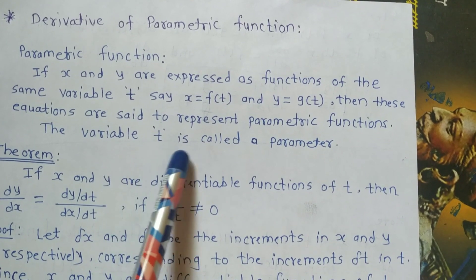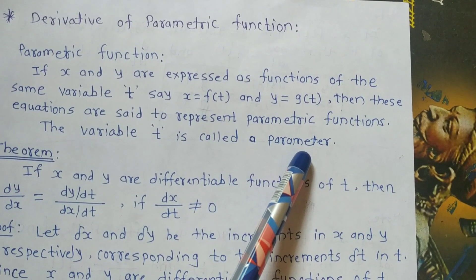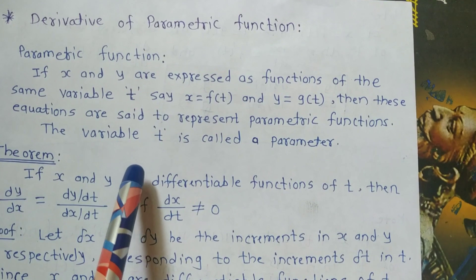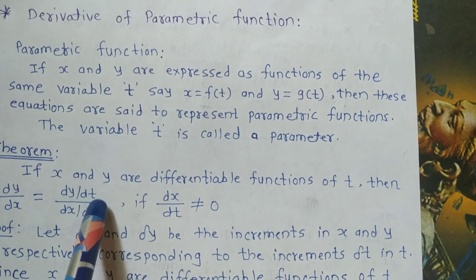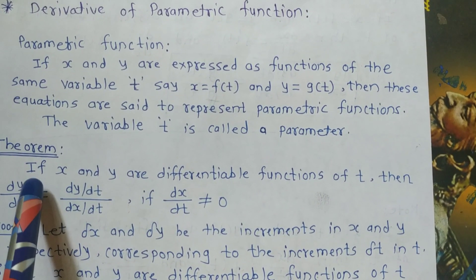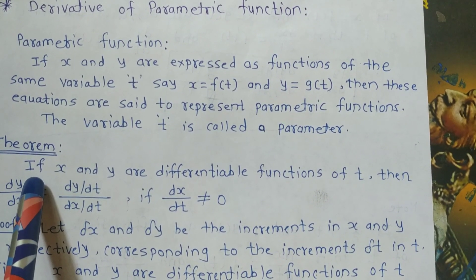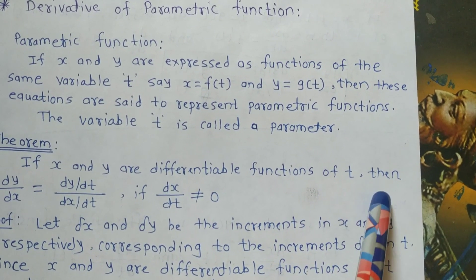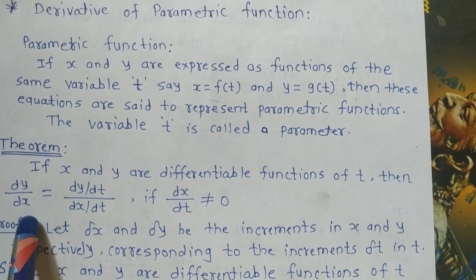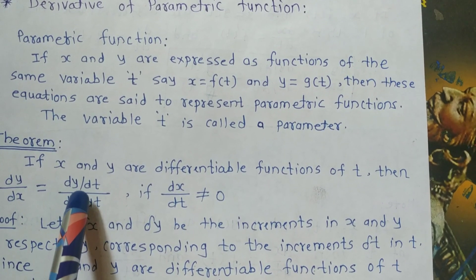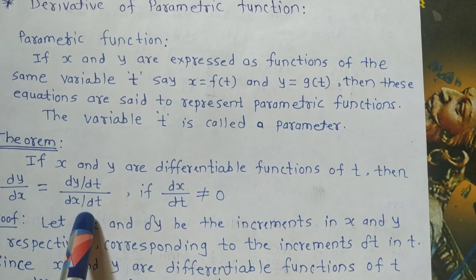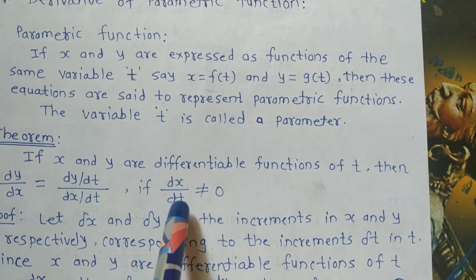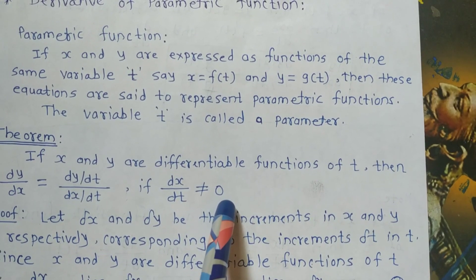Variable t is called a parameter. Now let us see the theorem for the derivative of parametric function. The statement is: If x and y are differentiable functions of t, then dy upon dx equal to dy upon dt upon dx upon dt, provided dx upon dt is not equal to 0.